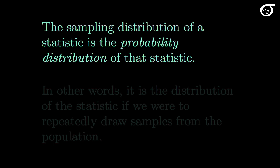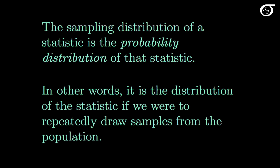The sampling distribution of a statistic is the probability distribution of that statistic. In other words, it is the distribution of the statistic if we were to repeatedly draw samples from the population. So if we were to get a sample, get a value of a statistic, and draw a different sample of the same sample size and get a value of that statistic, the statistic is going to vary from sample to sample according to the sampling distribution of that statistic.